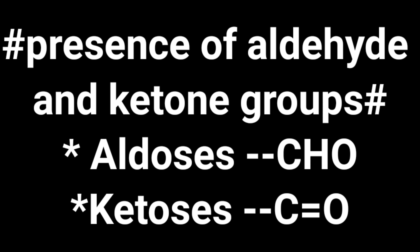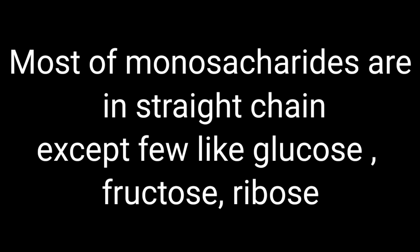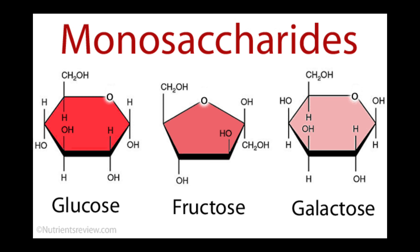Most monosaccharides are in straight-chain structures, except a few which occur in ring form. For example, glucose, galactose, fructose, and ribose may also appear in ring-like structures, as shown in the example here.